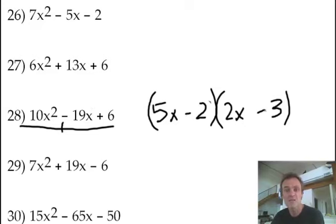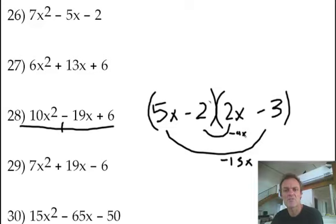5x times negative 3, negative 15x, negative 2 times 2x, negative 4x. There's your negative 9x when you combine them. So, you know, that's why they call it trial and error, folks.